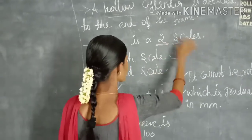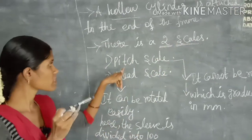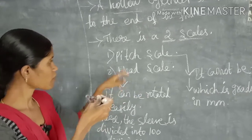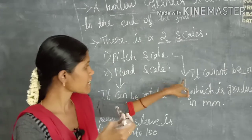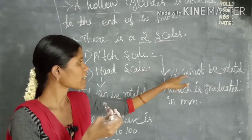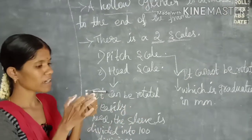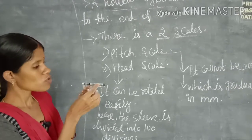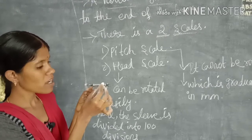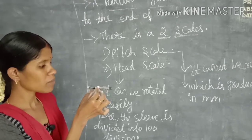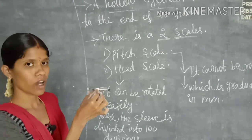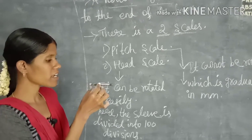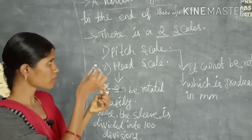There are two scales on the screw gauge. The first is known as the pitch scale, and the other is the head scale. The pitch scale cannot be rotated — it is fixed. The readings on the pitch scale are graduated in millimeters.